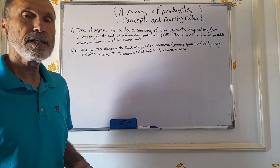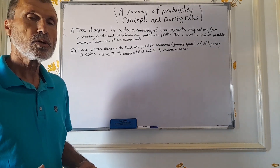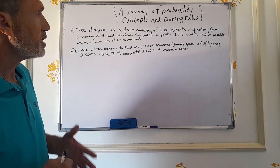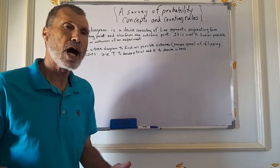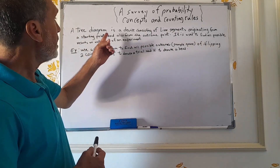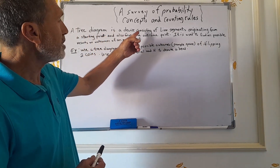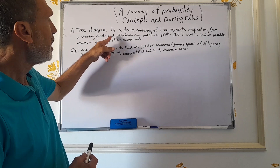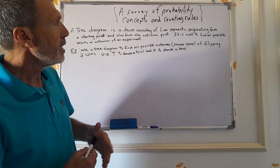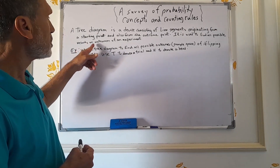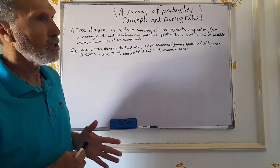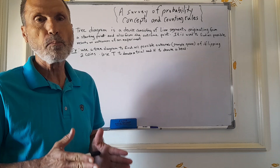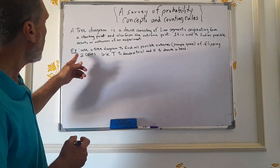A tree diagram is a device used to find all possible outcomes of an experiment. It consists of line segments originating from a starting point and from each outcome point. It is used to find all possible results or outcomes of an experiment.